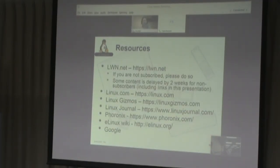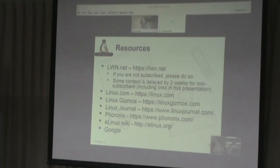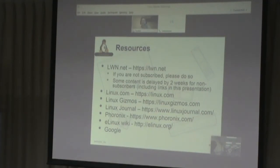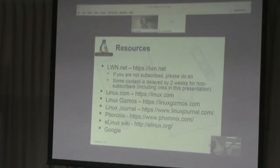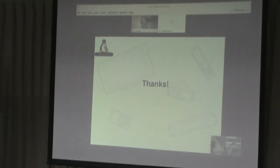I just want to show you where I get a lot of my information. If you want to follow Linux news, the best place is LWN.net — some content is delayed for two weeks for non-subscribers, but a subscription lets you see information immediately. Other good sources include Linux.com, Linux Gizmos, Linux Journal, and Phoronix. We also keep a lot of information out on the Helix Wiki. And of course, Google — if you want to look up a particular topic, usually you'll have the right words to find the material. With that, thank you for your time. Are there any questions?